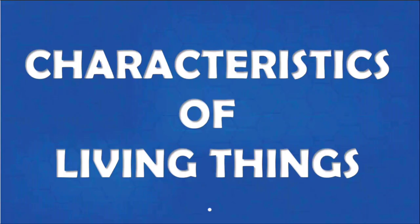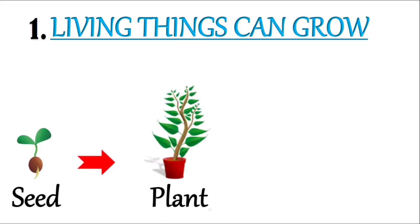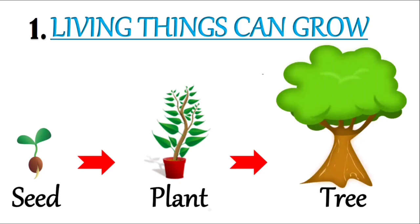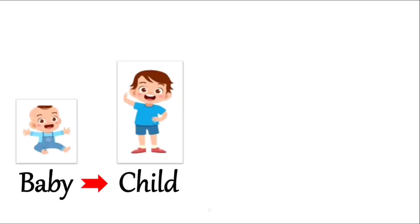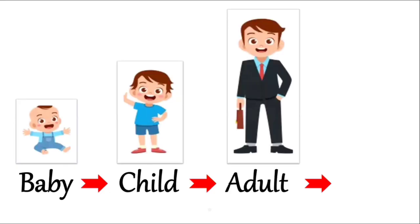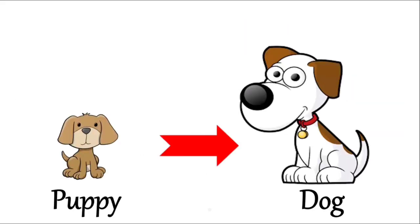Now let us see some of the characteristics of living things. Living things can grow. A seed grows into a plant, which finally grows into a tall, strong tree. The same way, a baby grows into a child, then into an adult, and finally an old person. A puppy grows into a dog.